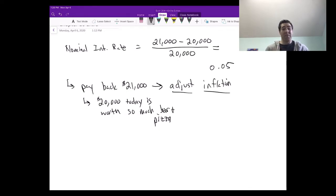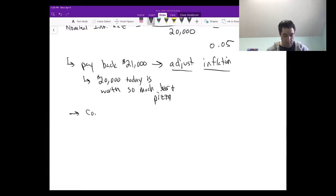In other words, I need to convert that in terms of today's prices. How much beer and pizza will I give up when I pay the $21,000 or the $1,000 in interest? I need to convert the $21,000. You could go either way, you could convert the $20,000 into future dollars or the $21,000 into today's dollars. What I want to do is convert $21,000 in one year into today's dollars or prices.